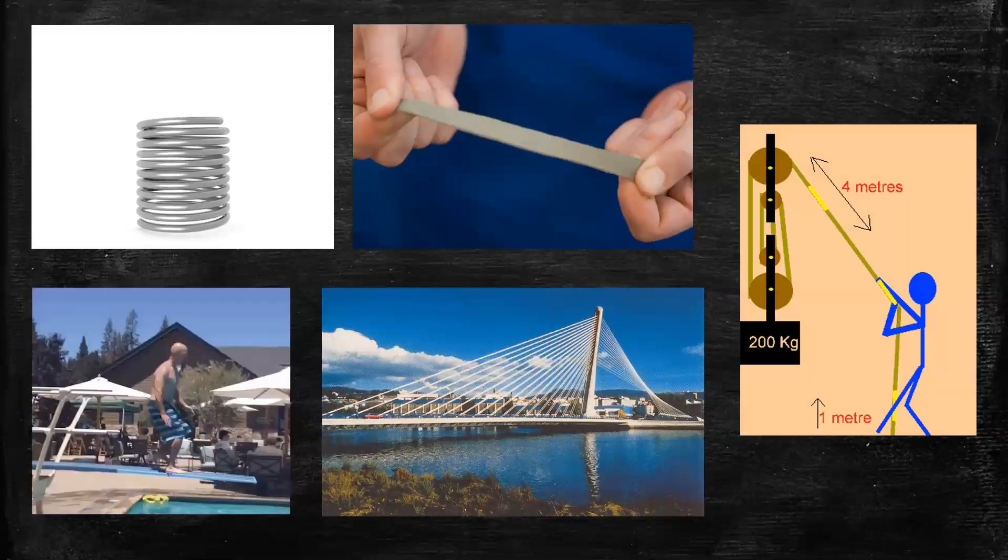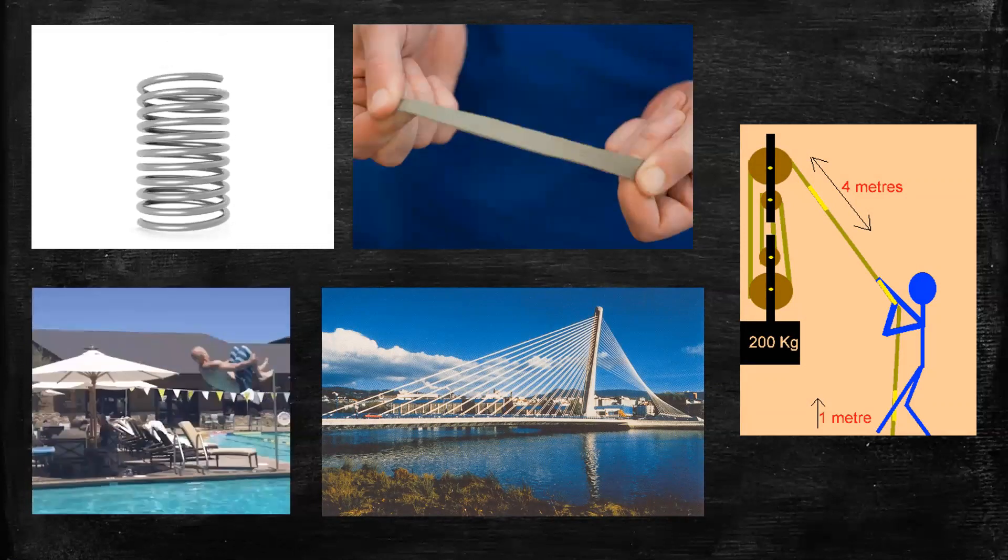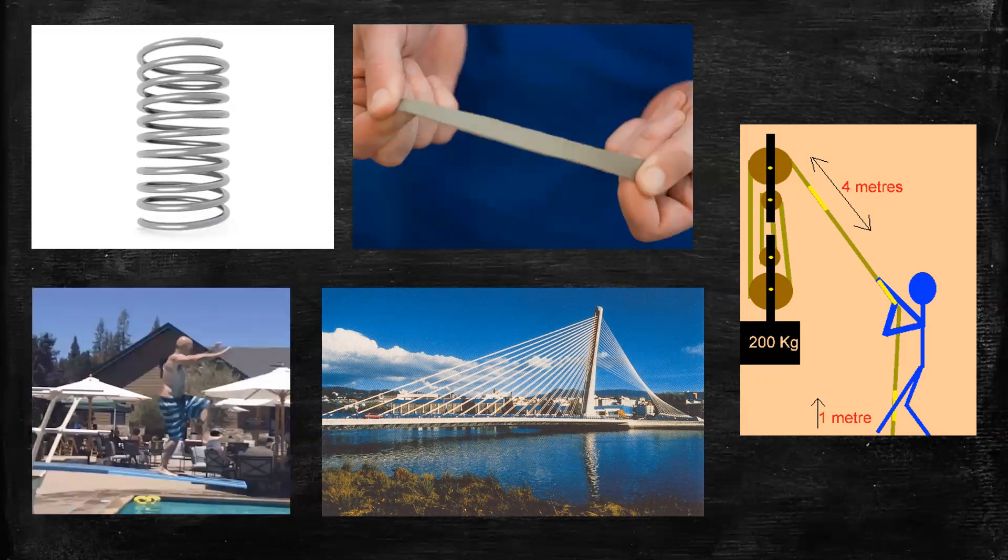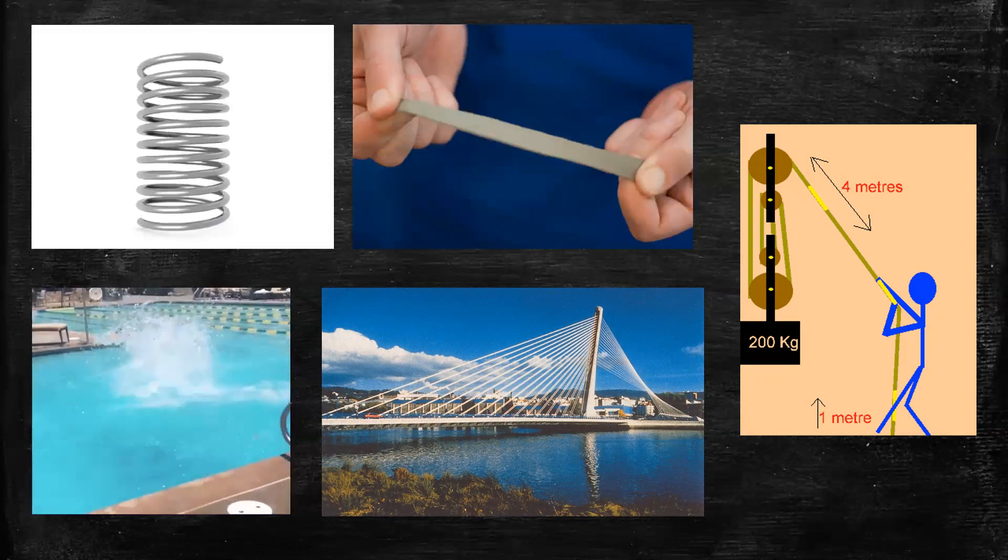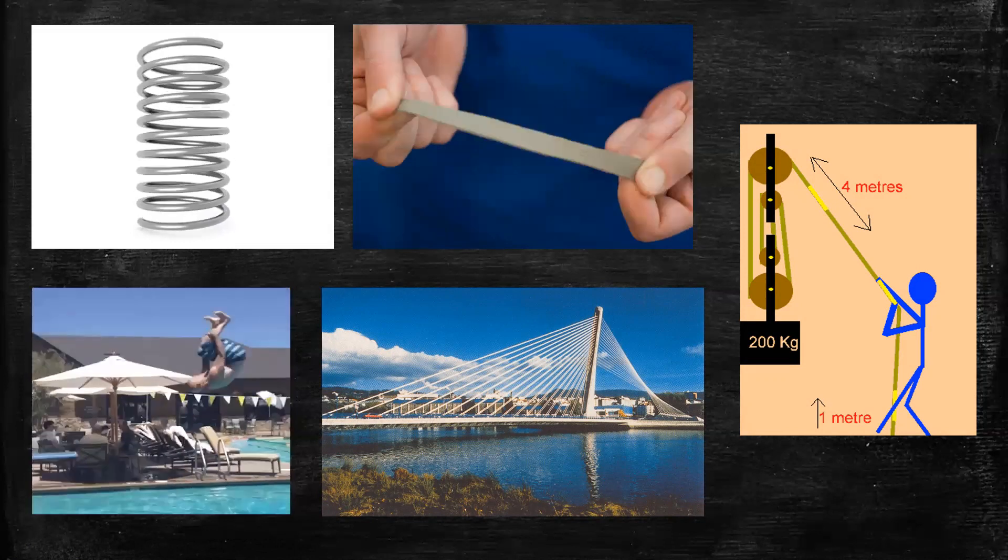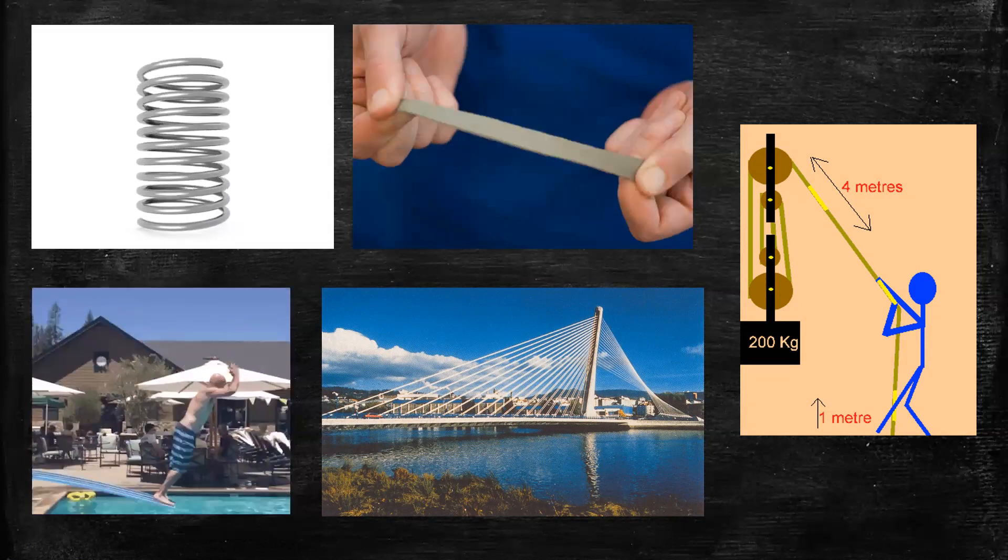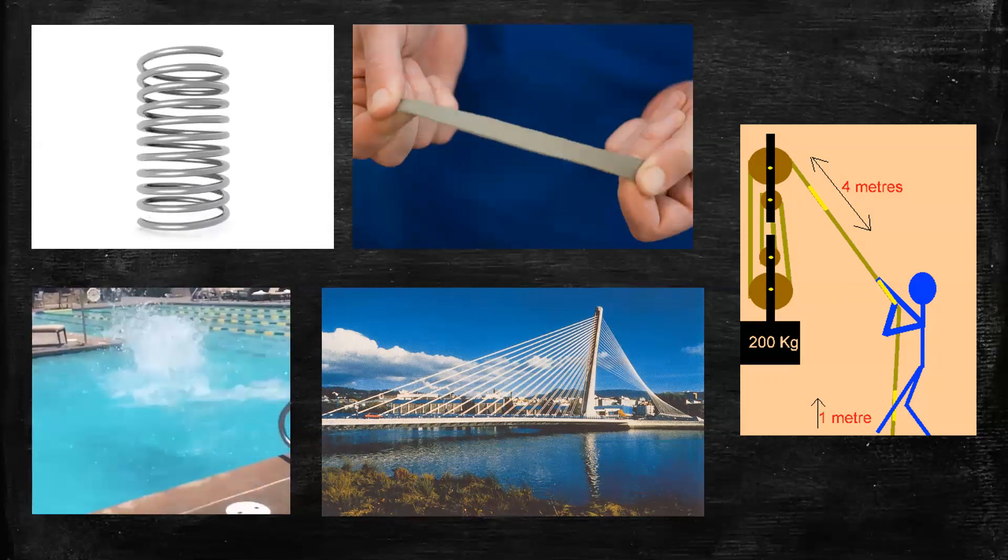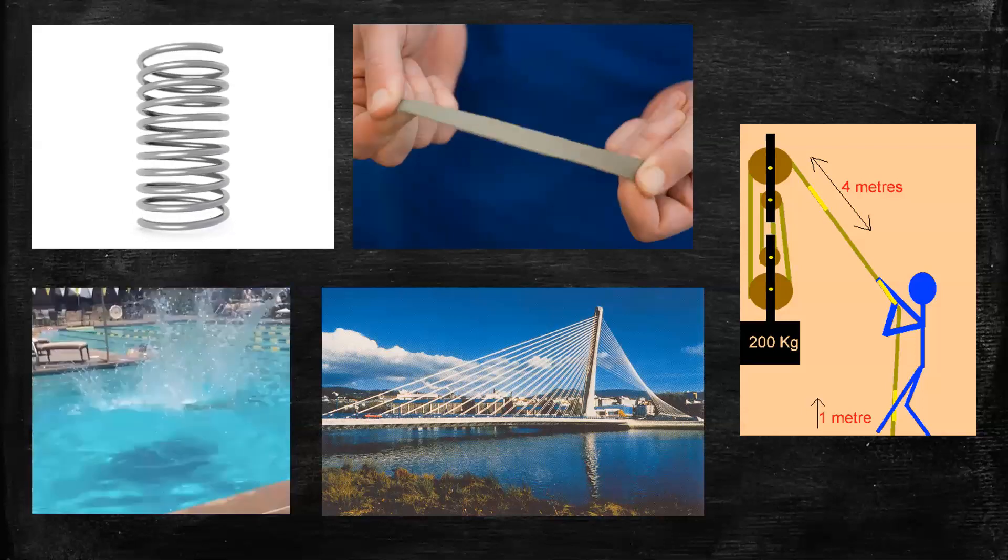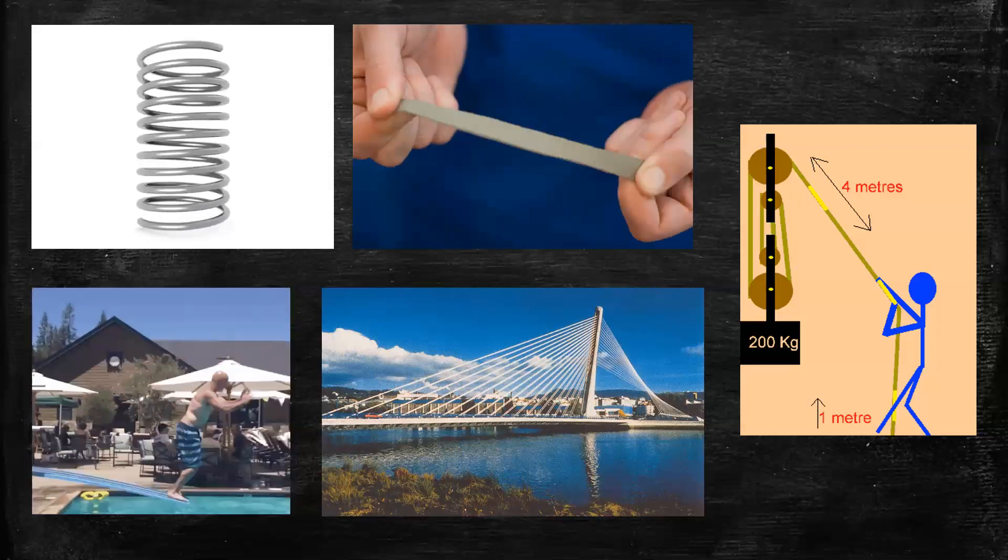This deformation in shape and ability to return to its original shape can be observed with steel at this picture. A bridge cable carrying the weight of the bridge is under stress and it has an elongation or deformation with its length. We can also see this with a rope that's used to pull a material with a pulley.